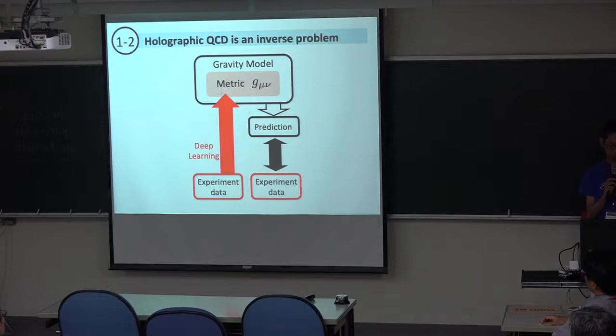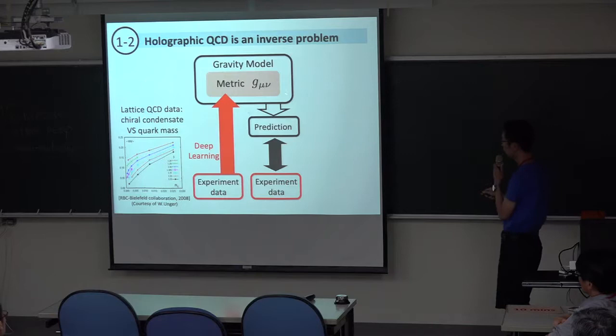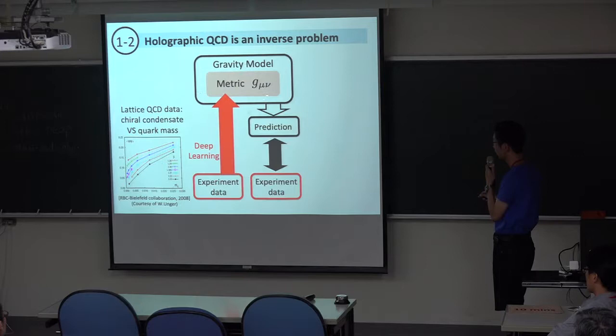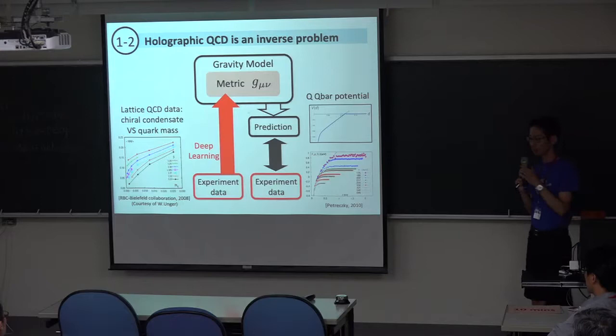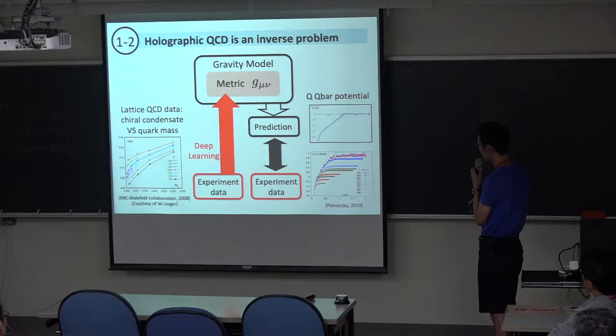In section two, I use chiral condensate data to fix a certain metric which reproduces this experimental data. Then I use the ADS/CFT prescription to predict or compute other observables of the model — specifically the QQbar potential — and compare that with other QCD data. This is the program I came up with.